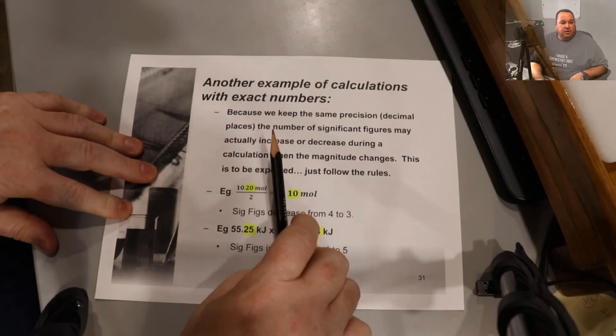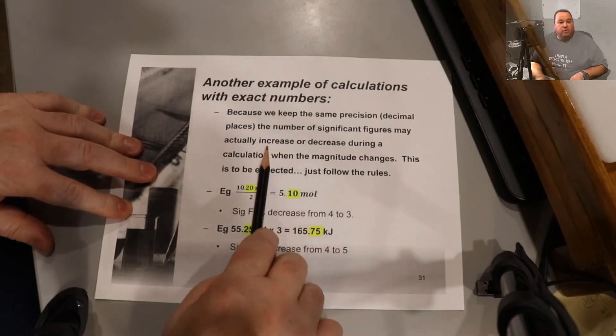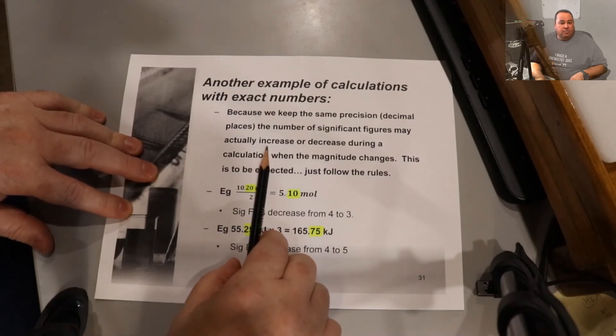Another thing to be aware of, it's entirely normal to see the number of sig figs increase or decrease in a calculation when the magnitude of the output changes. In other words, your power of ten. If you go from tens to hundreds or from hundreds down to tens, it's normal to see the sig figs increase or decrease. Don't worry about that, just follow your rules, and if you're following the rules, you have nothing to worry about.